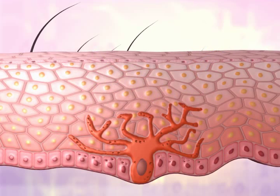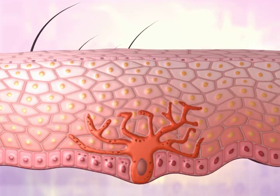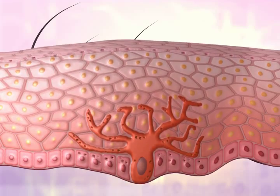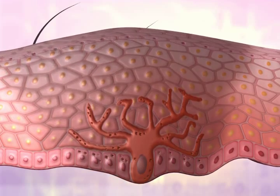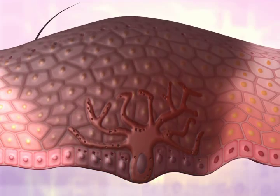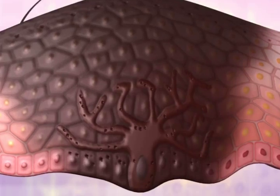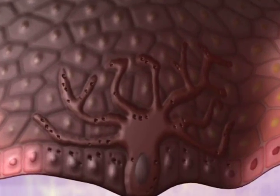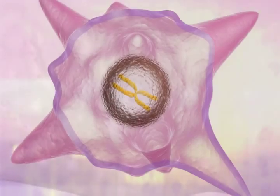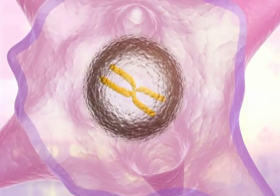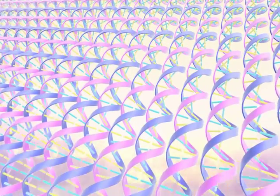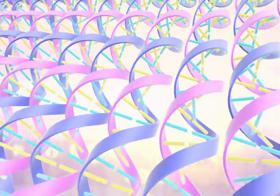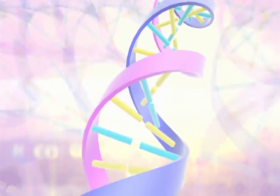Melanoma is a malignant tumor of melanocytes, which generally develops as a result of intrinsic or extrinsic factors. Intrinsic factors include inherited genotypes. The most predominant extrinsic factor is exposure to the sun.